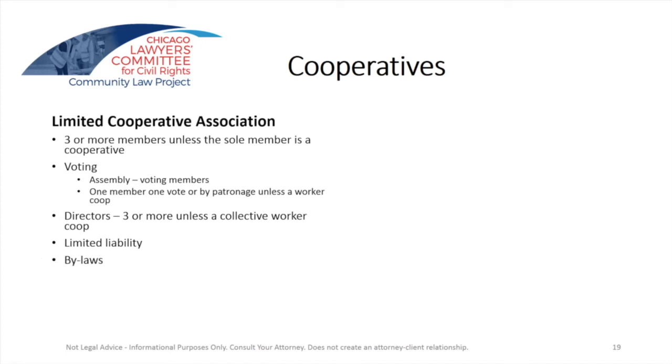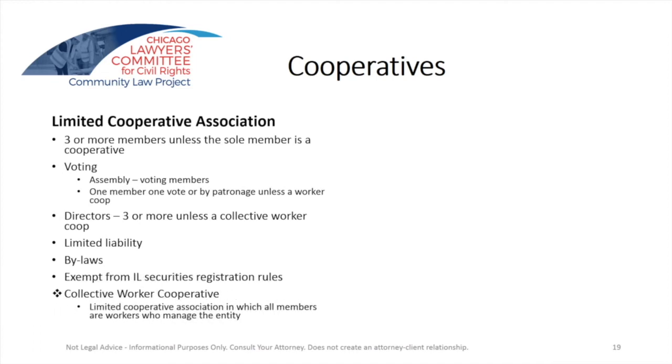You should have three or more directors, unless you're a collective worker cooperative — a cooperative owned and managed by the workers. There's limited liability with the limited cooperative association, so you get similar protections as with a corporation or an LLC. You need to have bylaws — those are required by statute. An added benefit for the limited cooperative association is that they're exempt from Illinois securities regulations. Securities regulations — both state and federal, like the Securities and Exchange Commission or SEC — basically regulate the issuance, sale, transactions, and ownership in companies. That's what you call securities: essentially an ownership interest in a company, business, or asset.